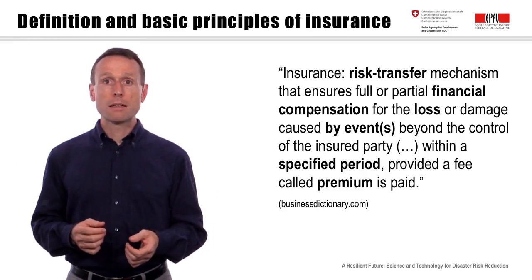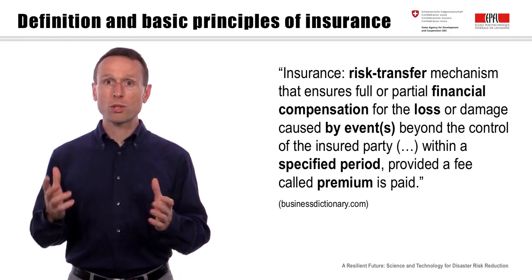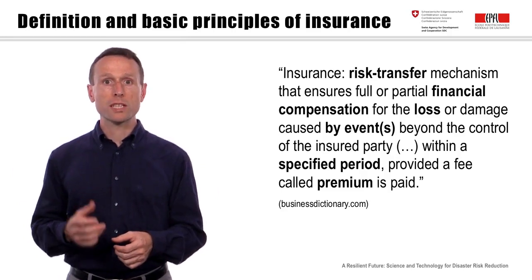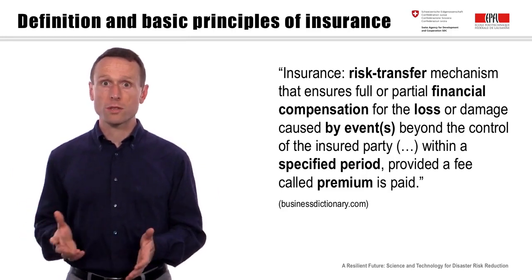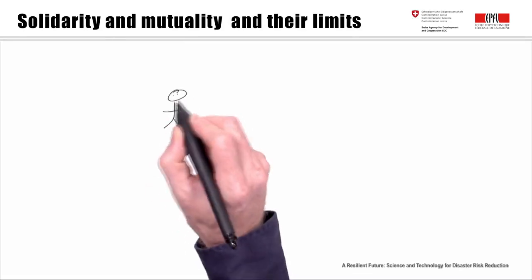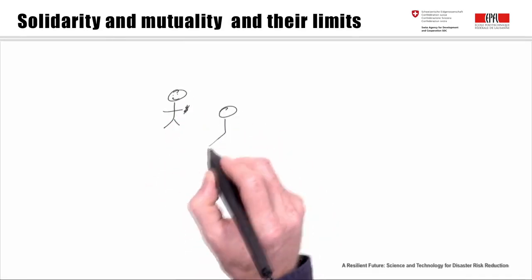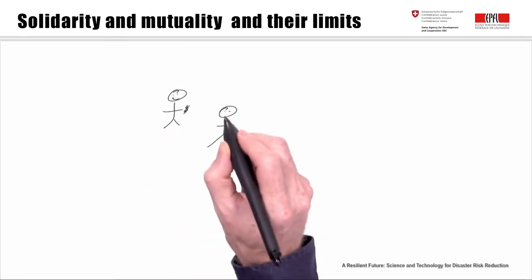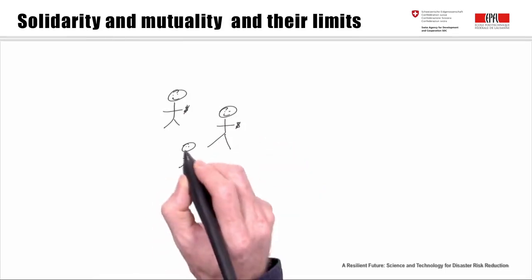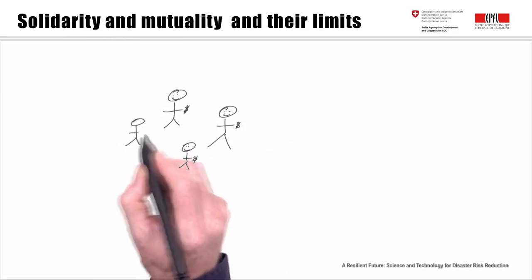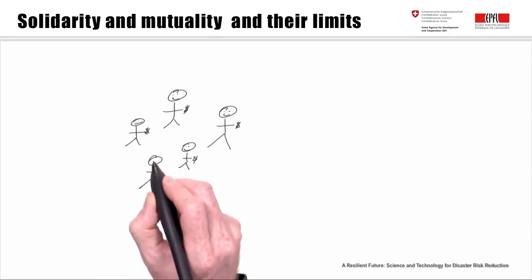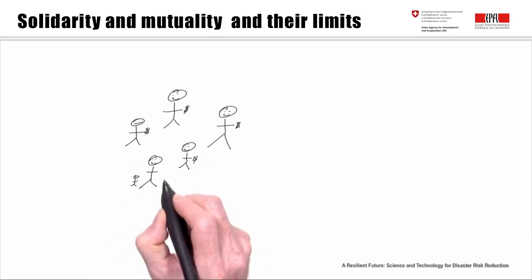People buy insurance because they seek protection from financial losses that come with expensive shocks. At the very heart of how insurance really works lies the principle of solidarity — it is about pooling of risks within a group, spreading costs within the community in order to absorb shocks.